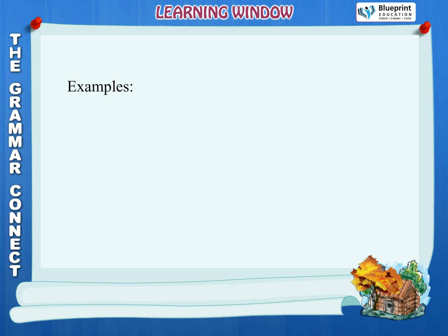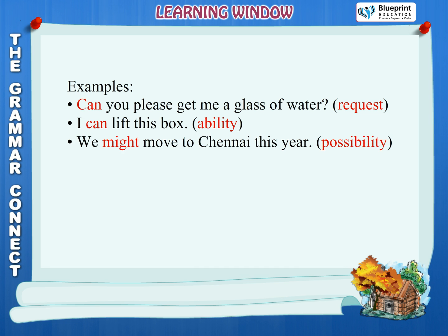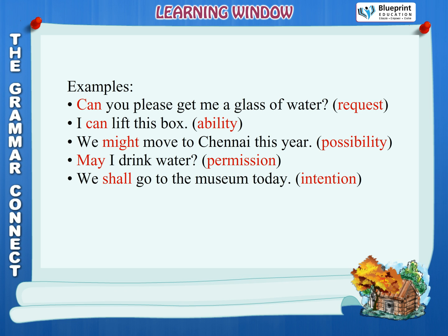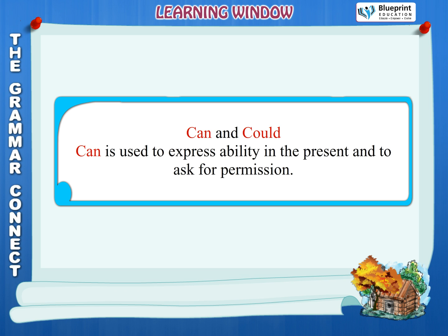Examples: Can you please get me a glass of water? — Request. I can lift this box — ability. We might move to Chennai this year — possibility. May I drink water? — Permission. We shall go to the museum today — intention. I will win the race — determination. I must finish my work today — necessity.